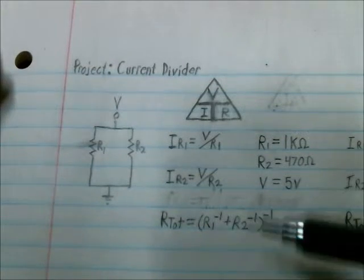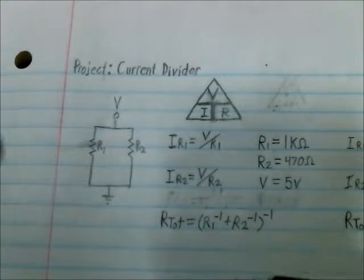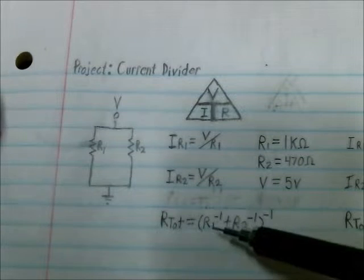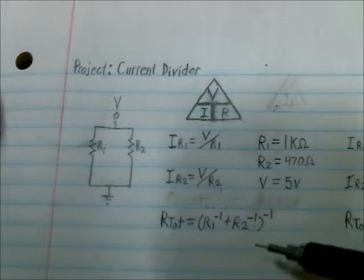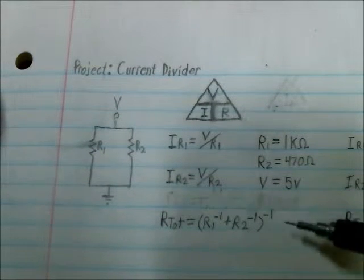So the way to calculate the equivalent resistance of the two resistors is the reciprocal of R1 plus the reciprocal of R2 and the sum of those two reciprocated.